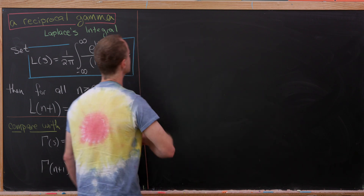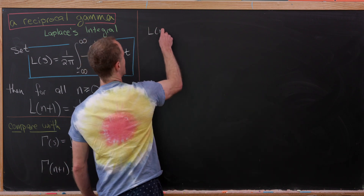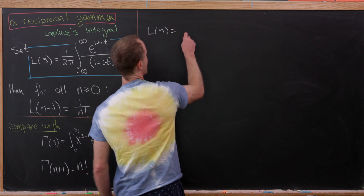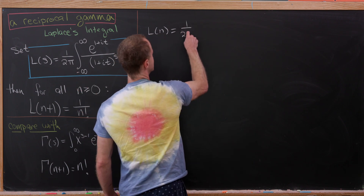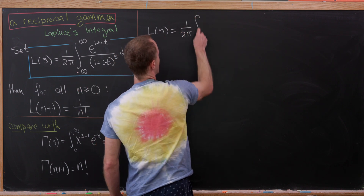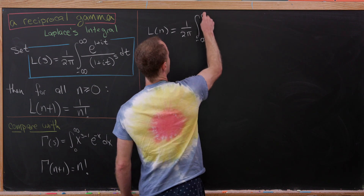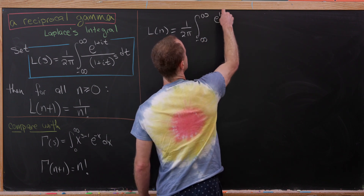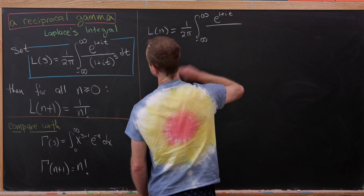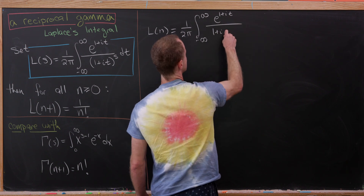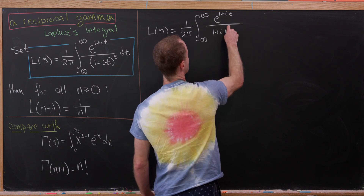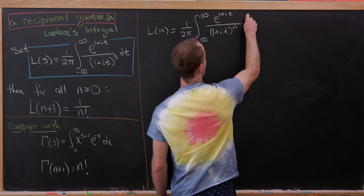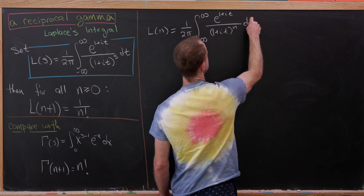We'll start by building a recursion between L(n+1) and L(n). So Laplace's integral L(n) is given by 1 over 2π times the integral from minus infinity to infinity of e to the (1 + it) over (1 + it) all raised to the n power, dt.